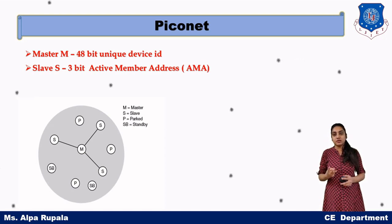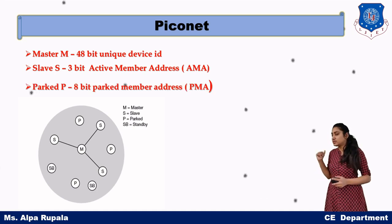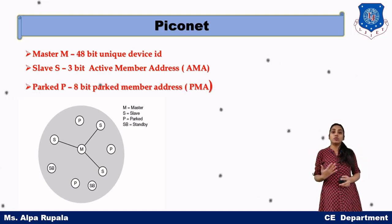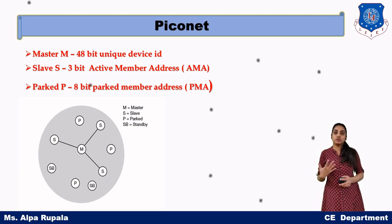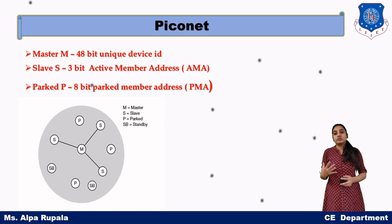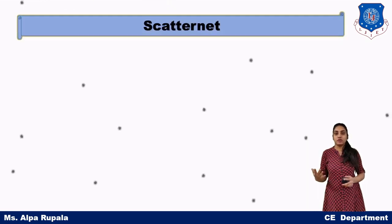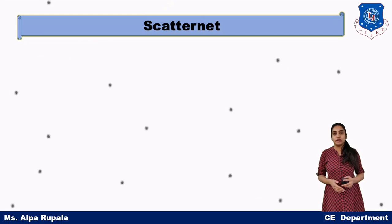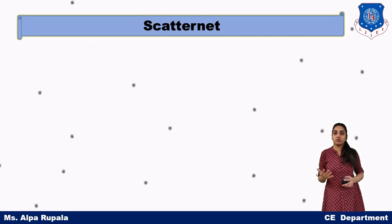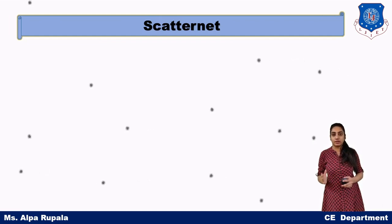According to that 3-bit active member address, we can have a total of 8 devices — 1 is master and the remaining 7 are slaves. We can also have 200 or more park devices, because we can give park devices an 8-bit park member address, known as PMA. We can have any number of standby devices because we are not even giving an identification number to the standby devices. All are connected as a Bluetooth Piconet network.